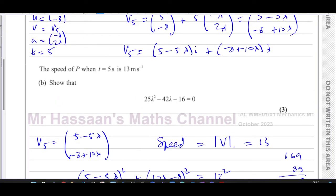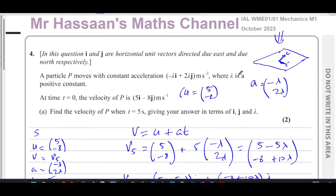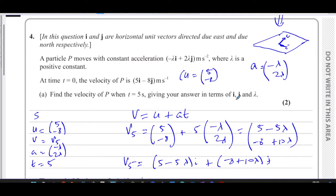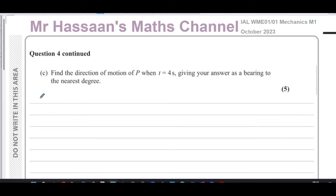For part C: find the direction of motion of P when t=4 seconds, giving the answer as a bearing to the nearest degree. We need to find the velocity at t=4 seconds.